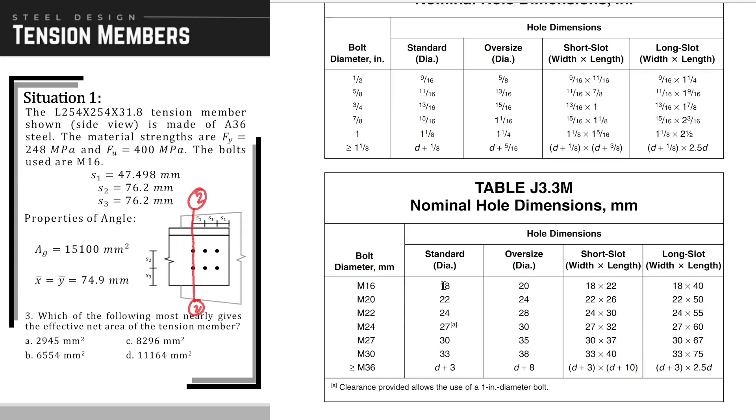The units of all the hole dimensions here is in millimeters. So the corresponding hole dimensions for our bolt is 18. By the way, it is not indicated in the problem if we have standard size or oversize. If that is the case, the default value is always the standard size. So in this case, our corresponding hole dimension is 18 millimeters.